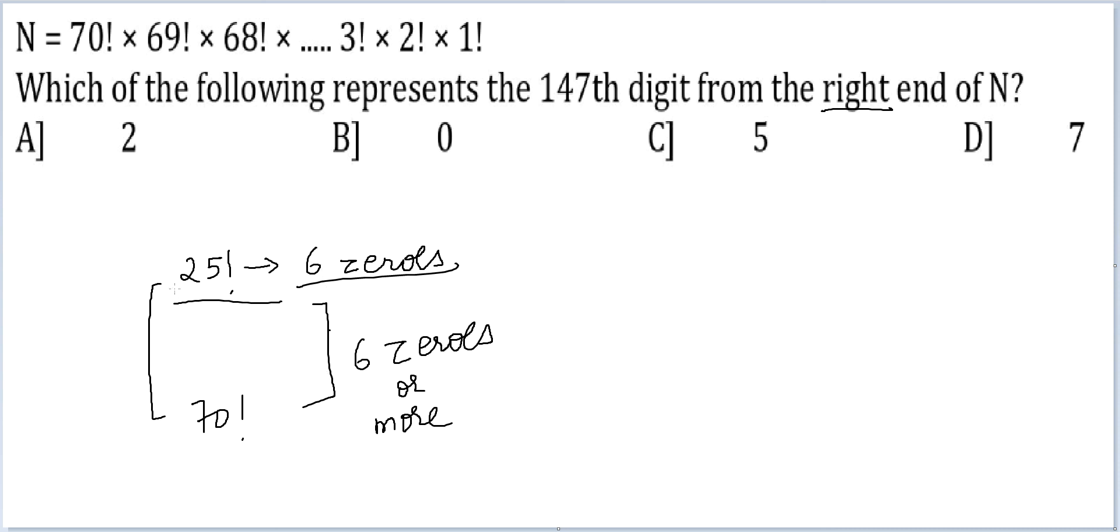If you see, there are 46 such numbers here. 46 into 6 is equal to 240 plus something, so there are more than 240 zeros at the end.